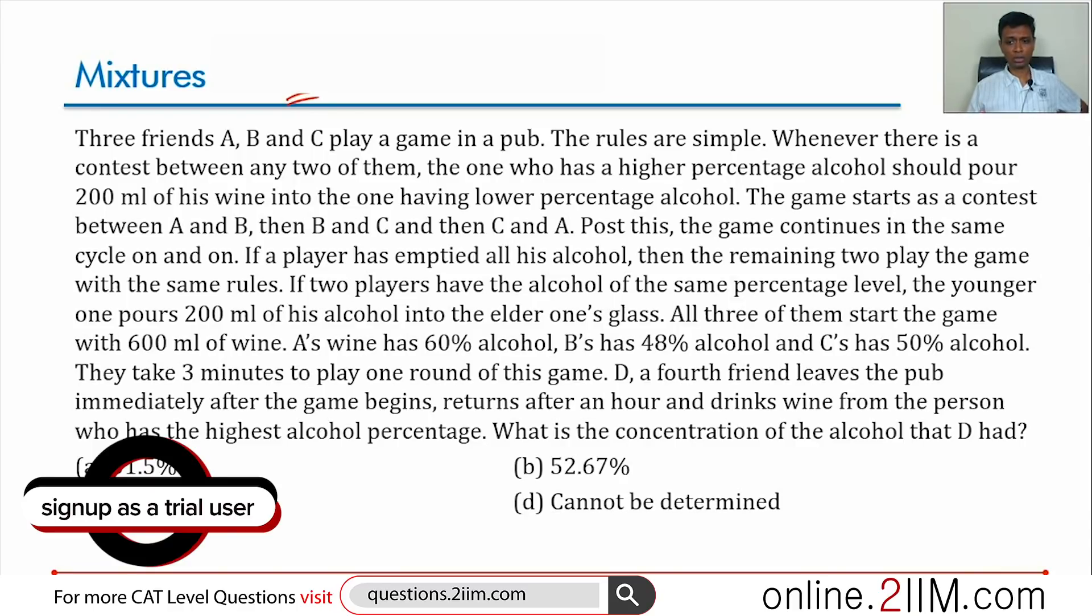If two players have the alcohol at the same percentage level, the younger one pours 200 ml of his alcohol into the elder one's glass. This is practically just a tiebreaker. All three of them start the game with 600 ml of